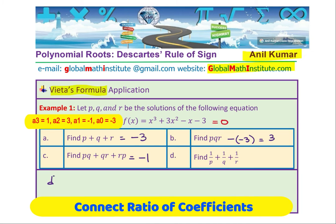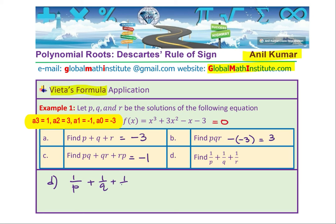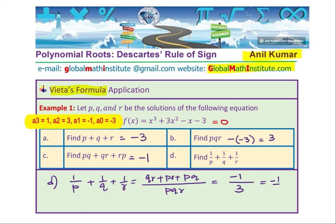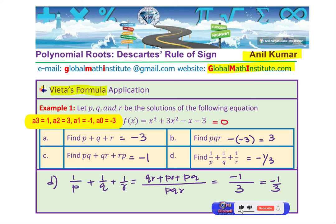For Part D, let us find 1/P + 1/Q + 1/R. We can take the LCM, which is PQR, the product of the roots. Then we have QR + PR + PQ over PQR. That is the symmetric sum of products of two roots, which is Part C, over the product of roots from Part B. So this is basically minus 1 over 3, which equals negative 1/3. Using Vieta's formula, we can very easily find the sum of roots, product of roots, and different combinations.